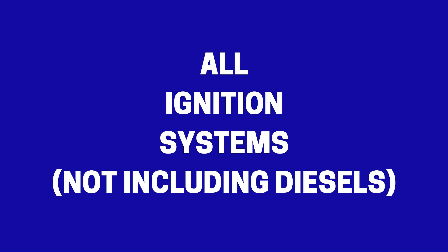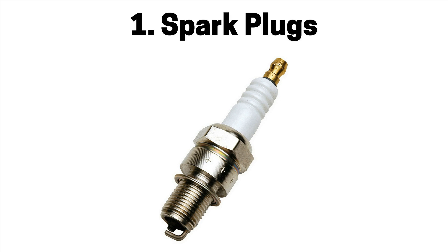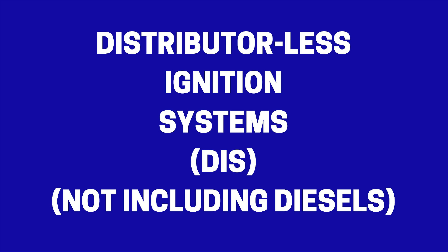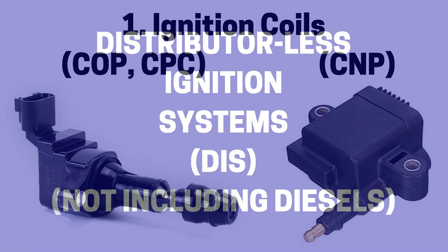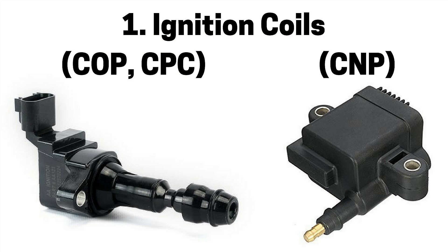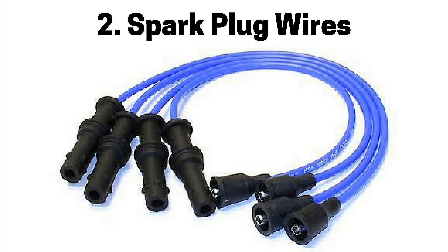Next pertains to all ignition systems, not including diesels. Number one is a faulty spark plug, not able to provide enough spark, causing engine misfire and a check engine light. Next pertains to distributorless ignition systems, also referred to as DIS, not including diesels. Number one is a faulty ignition coil, also referred to as a coil on plug, coil per cylinder, or coil near plug, not able to provide enough voltage to the spark plug, causing engine misfire and a check engine light. Number two is a faulty spark plug wire used on coil near plug ignition coils, which can cause engine misfire and a check engine light.